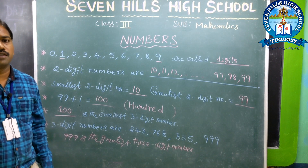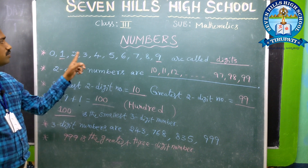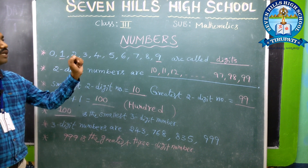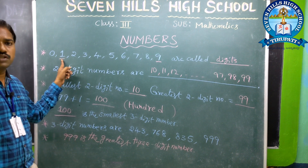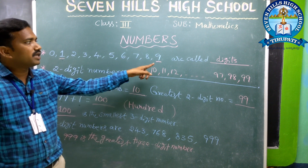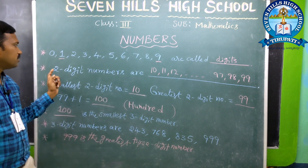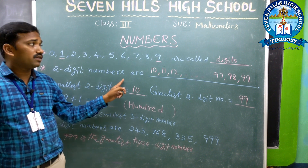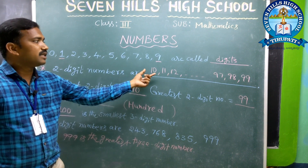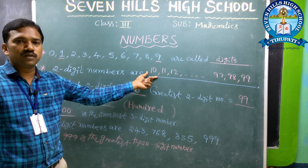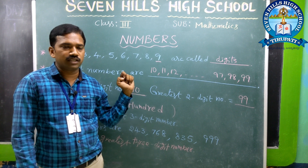Once again, I repeat all these. 0, 1, 2, up to 9 are called digits. 1 is the smallest 1-digit number and 9 is the greatest 1-digit number. 2-digit numbers start from 10, 11, up to 99. 10 is called the smallest 2-digit number and 99 is called the greatest 2-digit number.